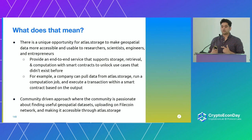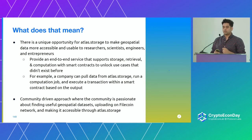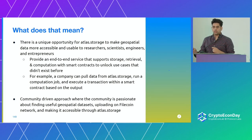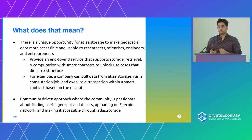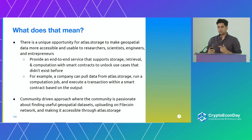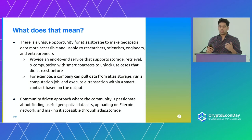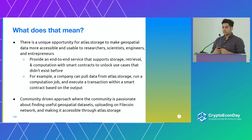The second part is a community-driven approach where the community is passionate about finding useful geospatial datasets and uploading them to the Filecoin network. Eventually, you want to upload all of humanity's geospatial information, and one single entity cannot do this — there need to be lots of nodes and lots of people uploading. A really interesting problem we're looking into is how you verify that a dataset is actually what it claims to be. For example, with a satellite image, how do you know the pixels haven't been manipulated from what the camera actually captured?